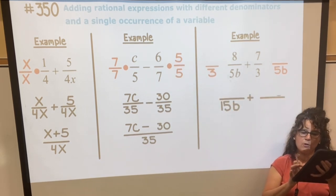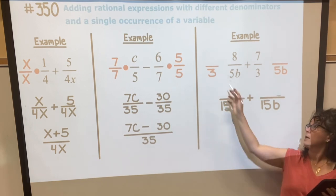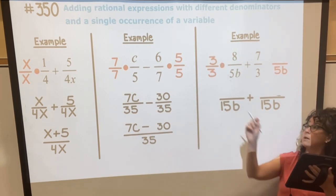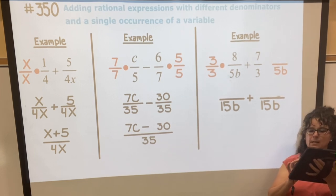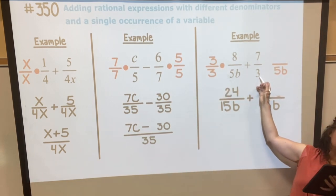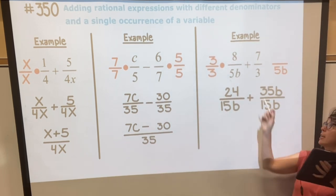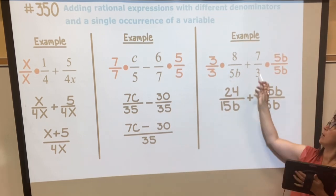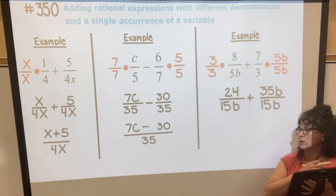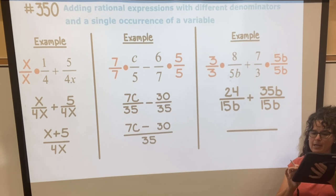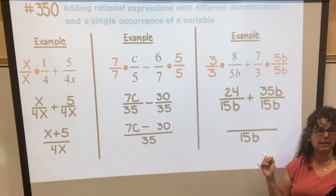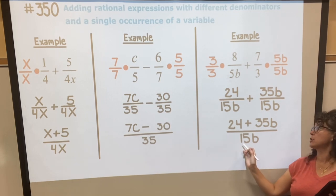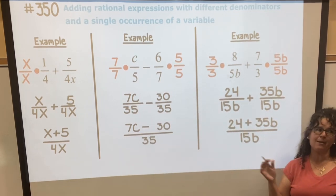So the denominators of my new fractions are going to be 15b. Whatever I do to the bottom I'm going to have to do to the top, so let's multiply the 8 by 3, and I get 24. I multiply this one by 5b, so again what I do to the bottom I've got to do to the top. So I'm going to multiply the top there by 5b as well, and 7 times 5 times b is 35b. Okay, so lastly, now that I have a common denominator of 15b, I can go ahead and add those tops together. So I have 24 plus 35b and I have my answer. Now if you wanted to write 35b plus 24 over 15b, same thing.